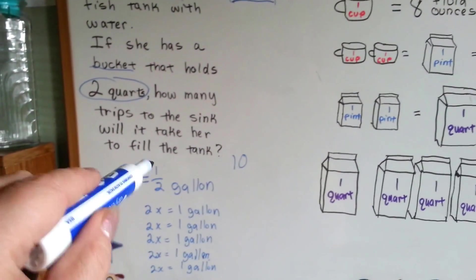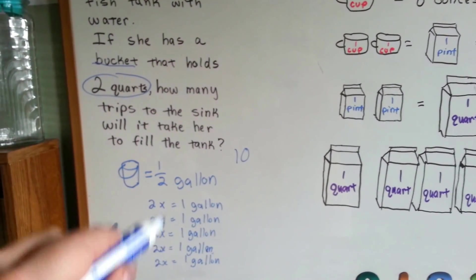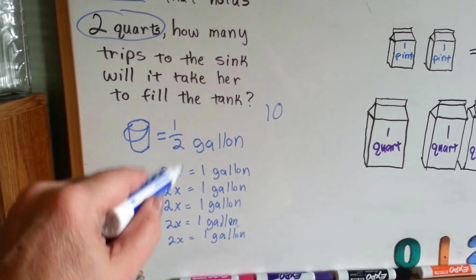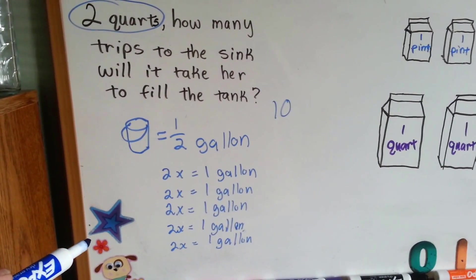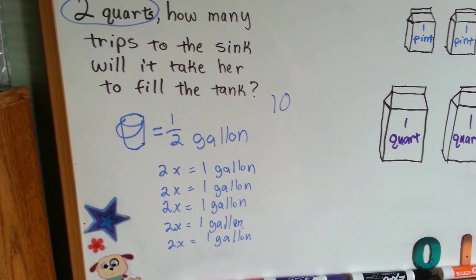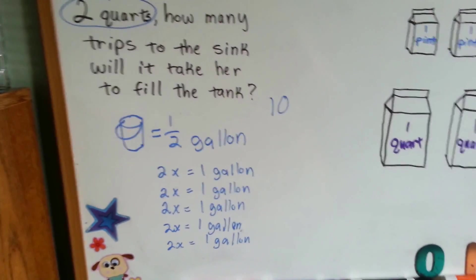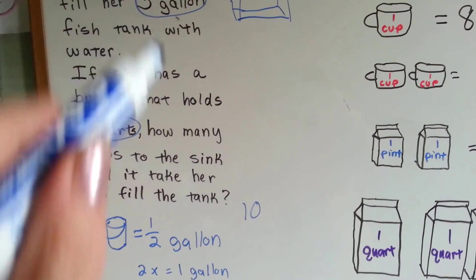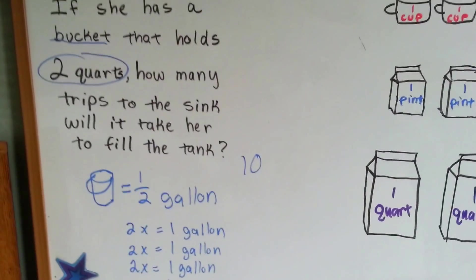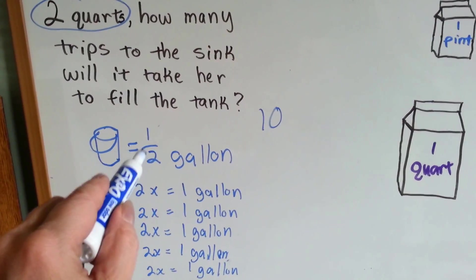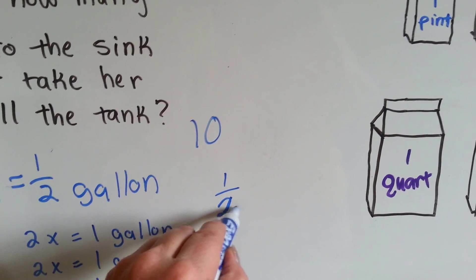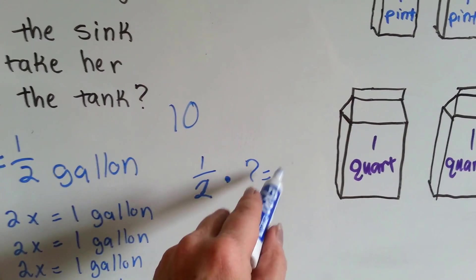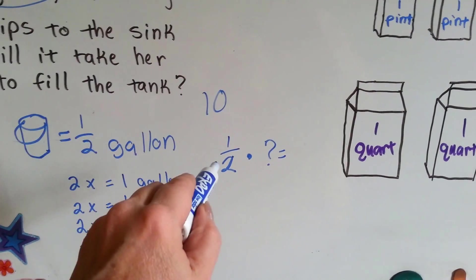Do you see how I used the drawing and this chart to count and answer the question? If you can do little things like this to help you answer a word problem, that's okay. If you've got scratch paper and need to draw it out, that's perfectly fine as long as you got the answer. Another way to do it: she needed five gallons, each bucket was a half gallon, so you multiply a half times something to get five gallons — ten halves is five.